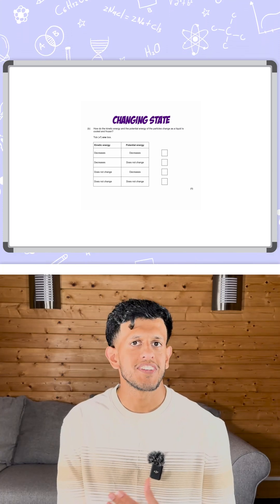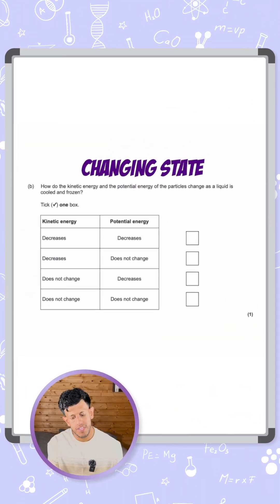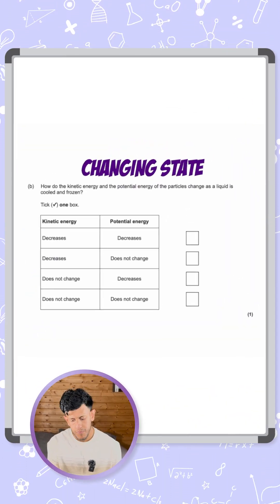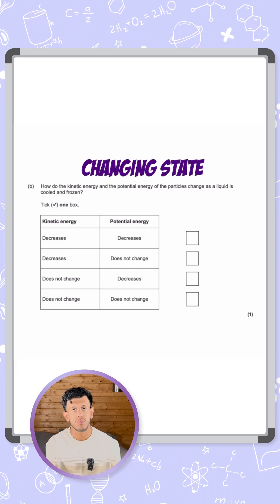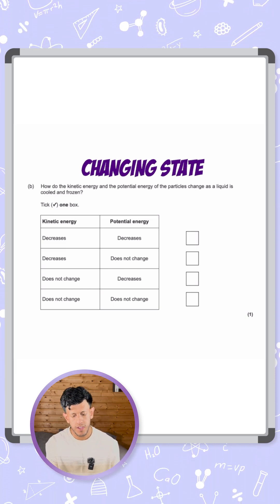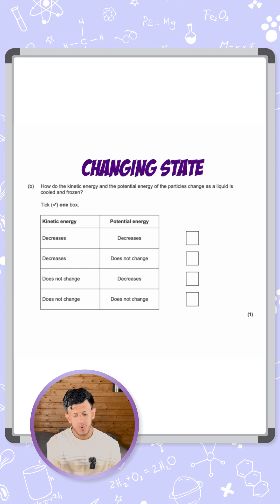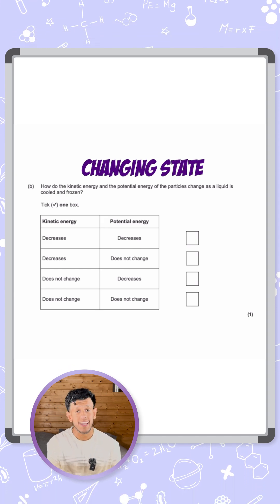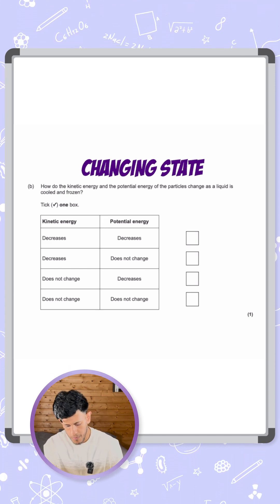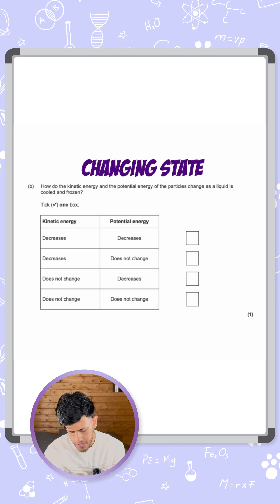Here's a question talking about changing states. It asks how do the kinetic energy and the potential energy of the particles change as a liquid is cooled and frozen — tick one of the boxes. So it's talking about which one is correct for kinetic and which one is correct for potential energy. We'll start with kinetic energy to narrow down our options.